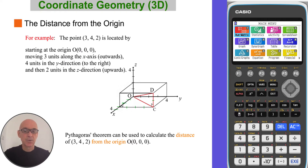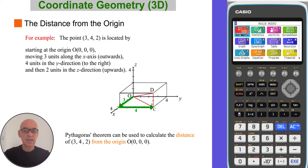On these axes, the point (3, 4, 2), for example, is located by starting at the origin O, and then moving three units along the x-axis — that's outwards towards us — then four units in the y-direction, that's to the right, and then finally two units in the z-direction, that's upwards.